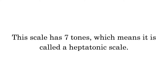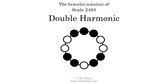This scale has 7 tones, which means it is called a heptatonic scale. This is a bracelet notation diagram of scale 2483. The shaded circles represent tones that appear in the scale, and they are read clockwise, starting at the top.